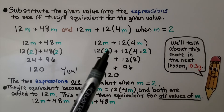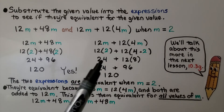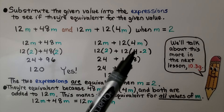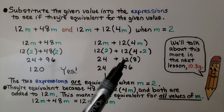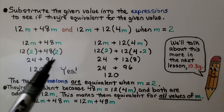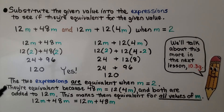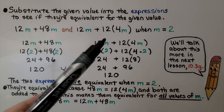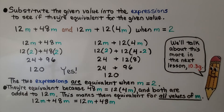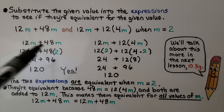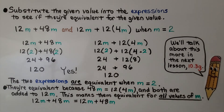When we put 2 in for m in the second expression, we have 12 times 2, which is 24, and 4 times 2, which is 8. Then 12 times 8, which is 96. It's the same addends — equal to 120. So the two expressions are equivalent when m equals 2. They're equivalent because 48m equals 12 times 4m, and both are added to 12m, making them equivalent for all values of m.